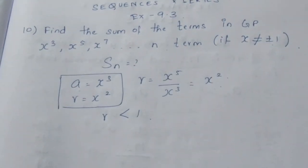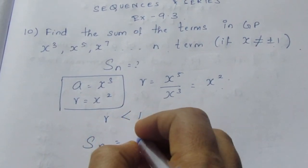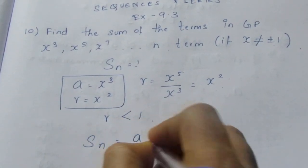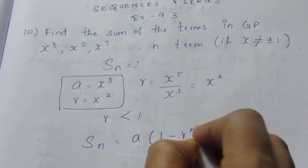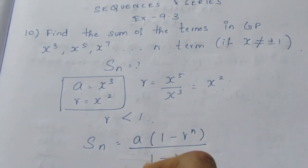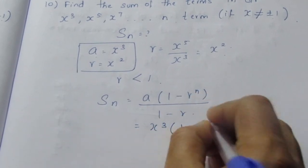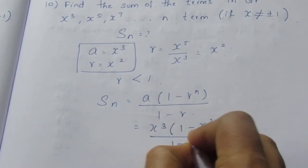We will substitute the Sn formula: a times 1 minus r to the power n, divided by 1 minus r. Now A is x cube into 1 minus x squared, divided by 1 minus x squared.